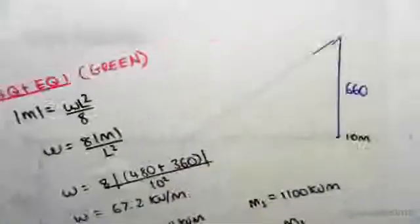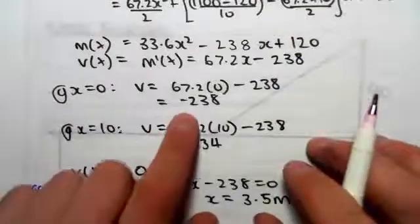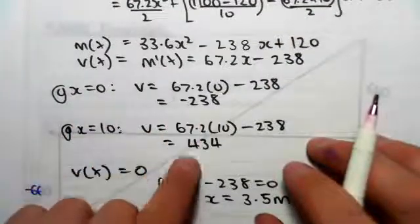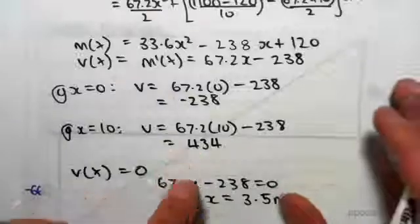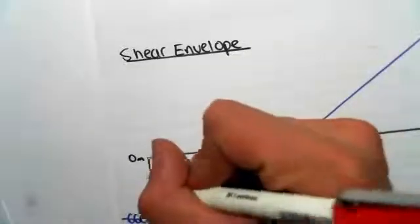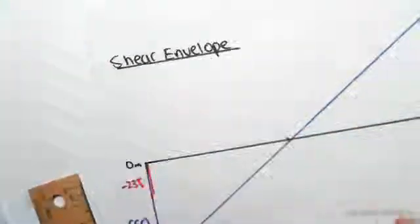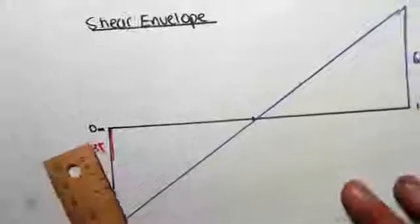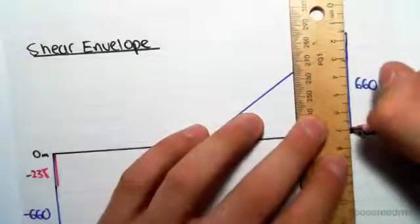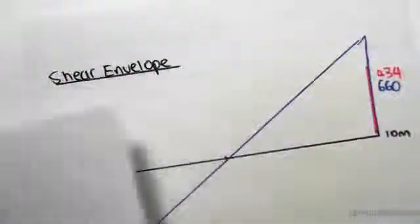Now the g plus 0.3q plus earthquake one we're going to draw that in. So at x equals 0 it's minus 238 and at x equals 10 it's 434. So minus 238 would roughly be here, that's minus 238, and x equals 10 was 434, so 434 would look something maybe like that.